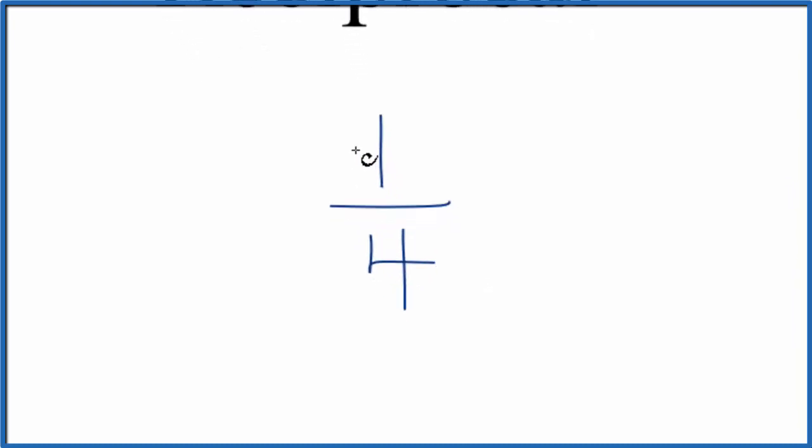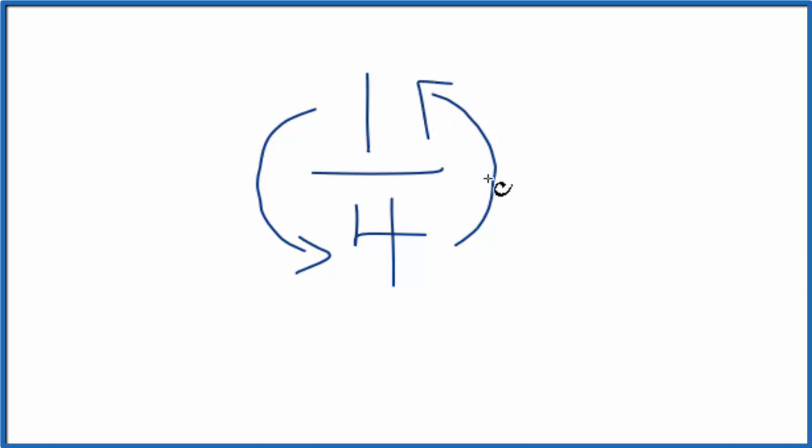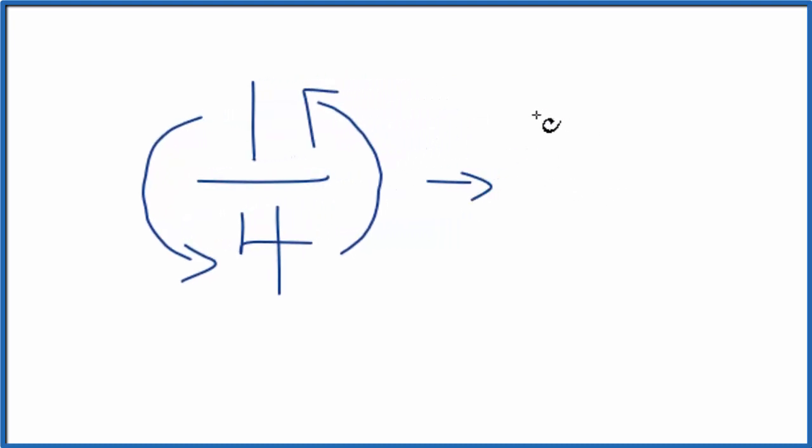The way we do that is we take the numerator, we move that down here, take the denominator, move that up top. So now we end up with four on top and one on the bottom.